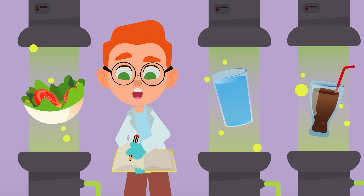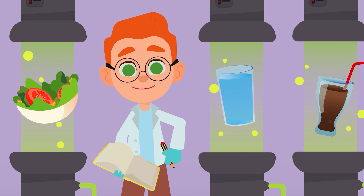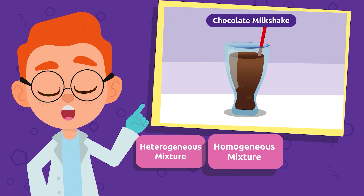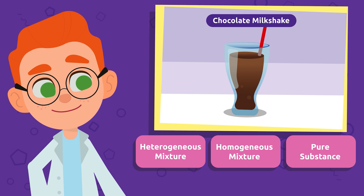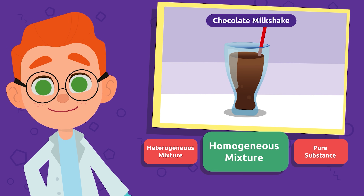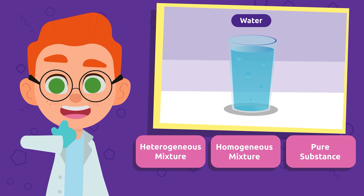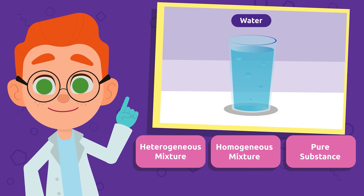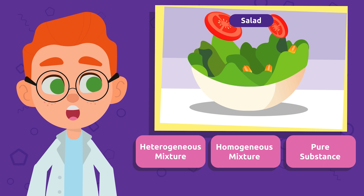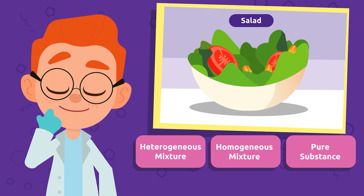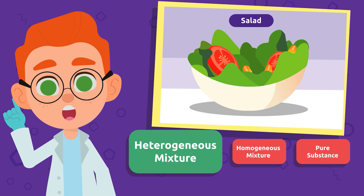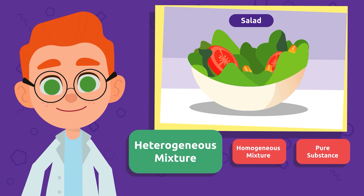I'm trying to write all this down — I don't want to miss anything. Would you like to practice what we learned? Let's classify these substances and mixtures together. What do we have here? A chocolate milkshake! This chocolate milkshake is a homogeneous mixture because its components can't be seen with the naked eye. What about water — what type of substance is it? Water is a pure substance because in a physical change its composition would stay the same. One more: this is a tomato, lettuce, and corn salad. How would we classify it?